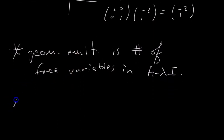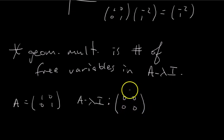So let's test that. We have A, remember, we were working with this guy. So A minus lambda I, we found lambda equals 1, A minus lambda I is 0, 0, 0, 0. How many free variables? 2. So the geometric multiplicity of lambda equals 1 is 2.